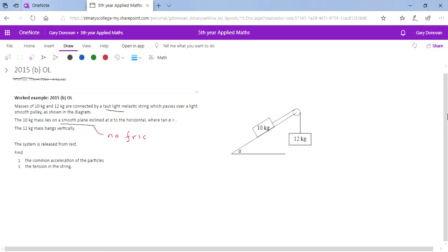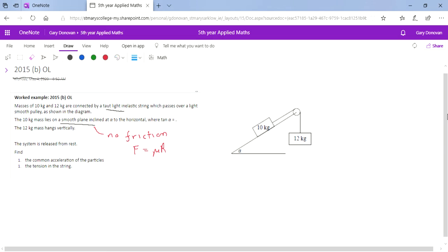So we don't need to worry about our friction equation F equals mu times R for this example. It's at an angle of alpha to the horizontal where tan of alpha equals 4 over 3. The 12 kg mass hangs vertically. The system is released from rest. Find the common acceleration of the particles and the tension in the string.